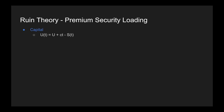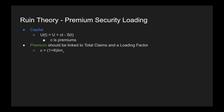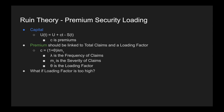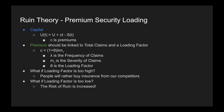Ruin theory does get more complicated. Let's talk about premium security loading. The idea is that premiums should be linked to total claims and a loading factor. Instead of C being an arbitrary number, it should be given by the formula: C = lambda × m1 × (1 + theta), where lambda is the frequency of claims, m1 is the severity of claims, and theta is the loading factor. If the loading factor is too high, people will buy insurance from competitors. If it's too low, the risk of ruin increases. The premium should be connected to the risk — a risk premium plus a loading factor to allow for unexpected events and protect the firm from ruin.